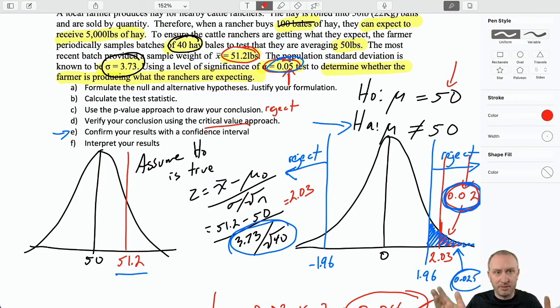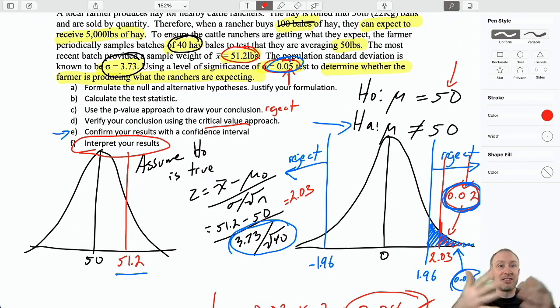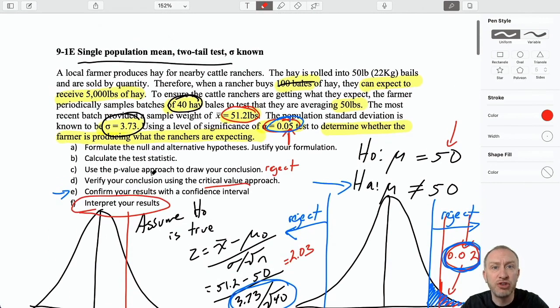So finally, interpret our results. Every approach, all three approaches, led us to reject the null hypothesis. We have evidence that there's a problem here. We have evidence to show that the average bale of hay is not 50 pounds. Therefore, the ranchers who are buying the hay are not getting exactly what it is they're expected to get. Okay, so that's it. That's our two-tail test with the p-value, critical value, and a confidence interval to wrap it all up. I hope that was helpful. Thanks for watching.